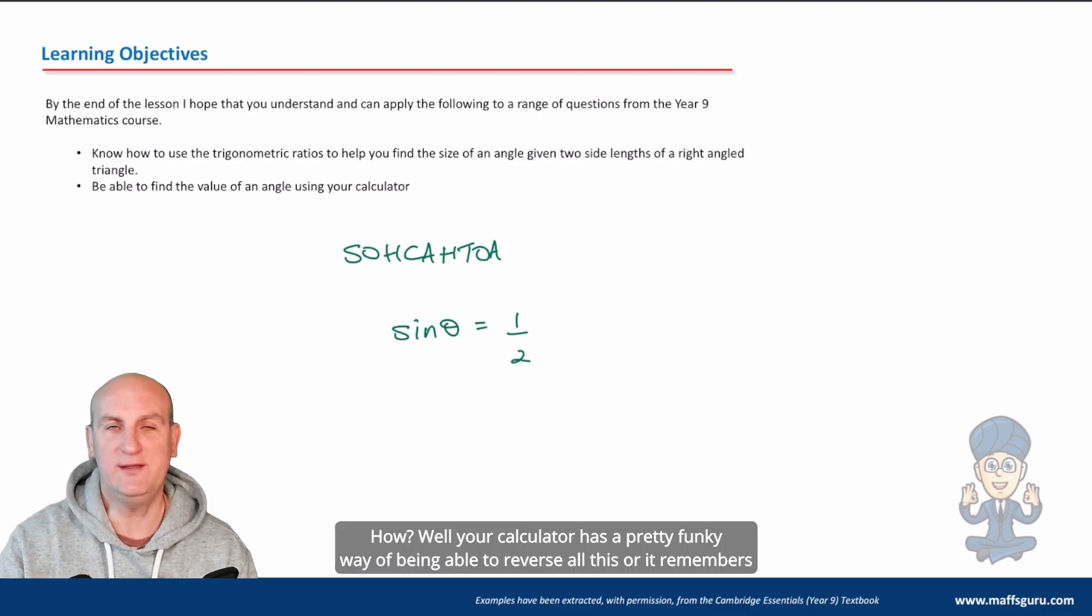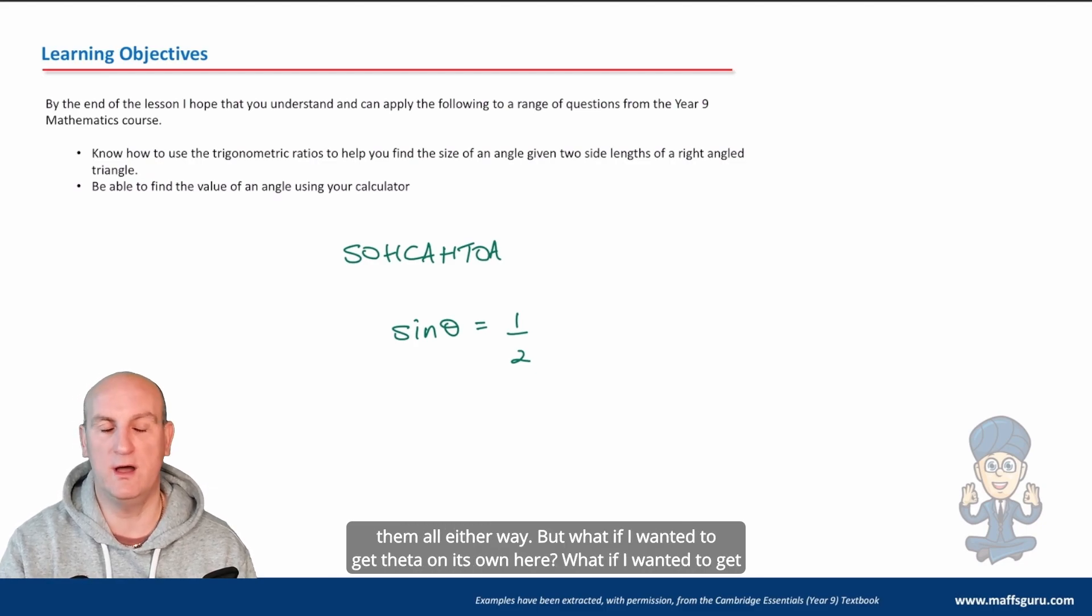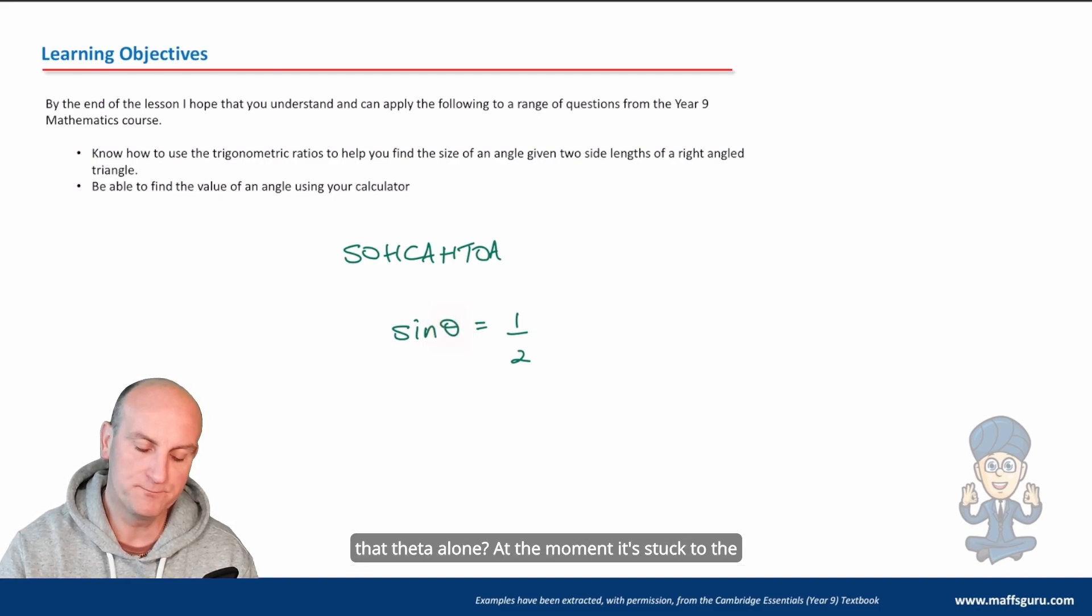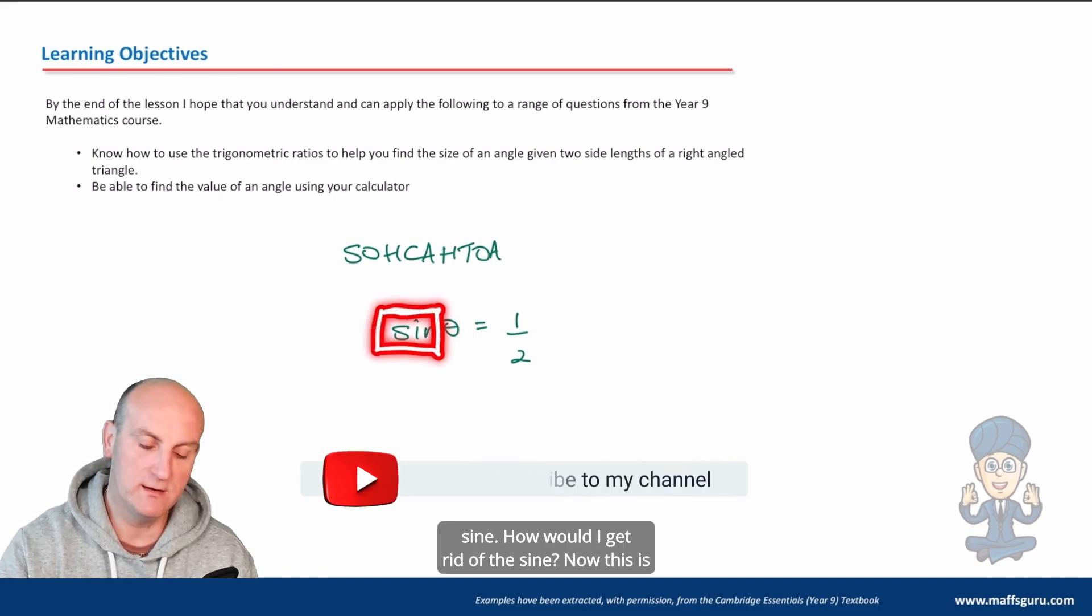How? Well, your calculator has a pretty funky way of being able to reverse all this or it remembers them all. Either way. But what if I wanted to get theta on its own here? What if I wanted to get that theta alone? At the moment, it's stuck to the sine.